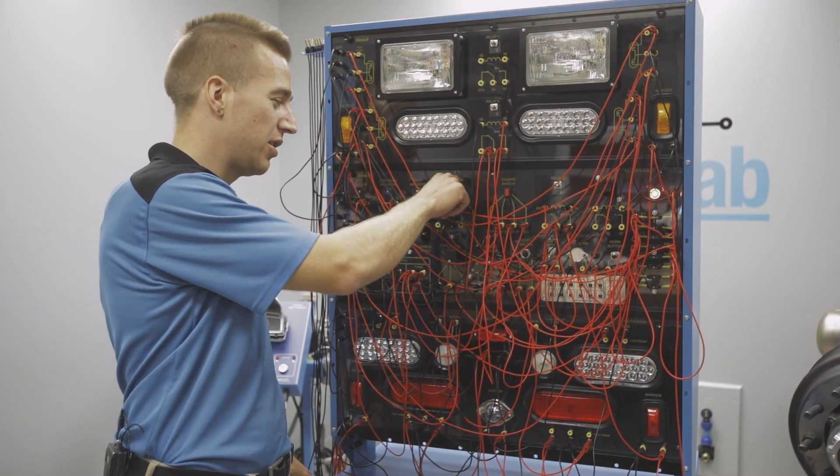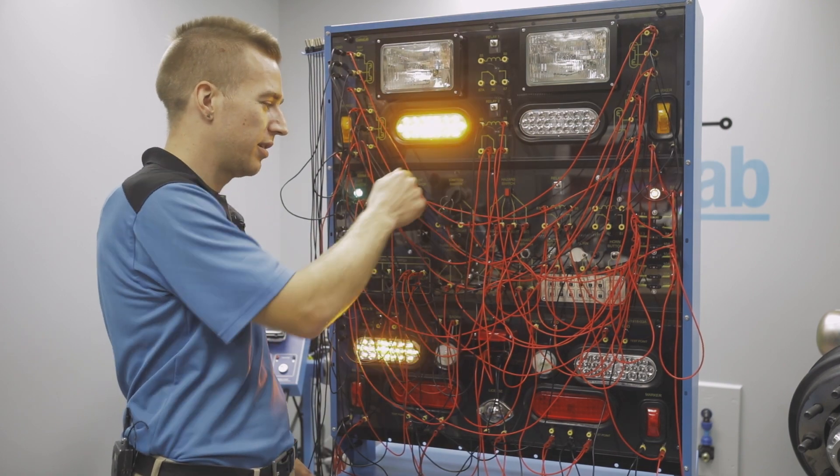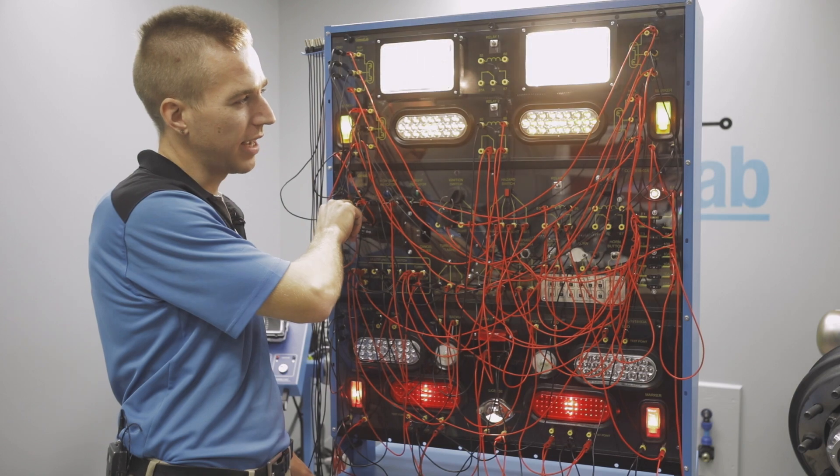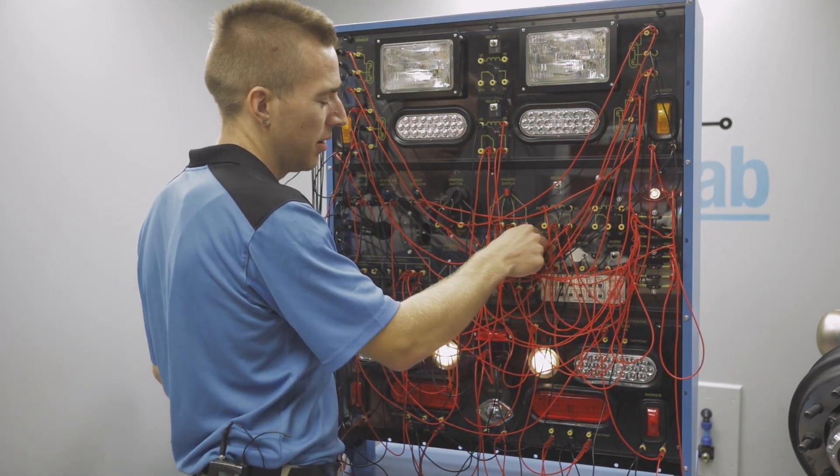We need to use the ignition key for things like the turn signals. Turn signals don't work until the ignition key is on. We've got our park lights, our headlights, we've got a horn, we've got our backup lights, our brake lights.